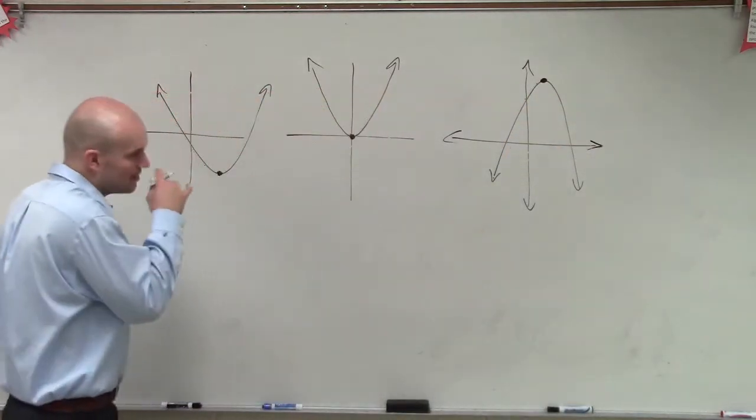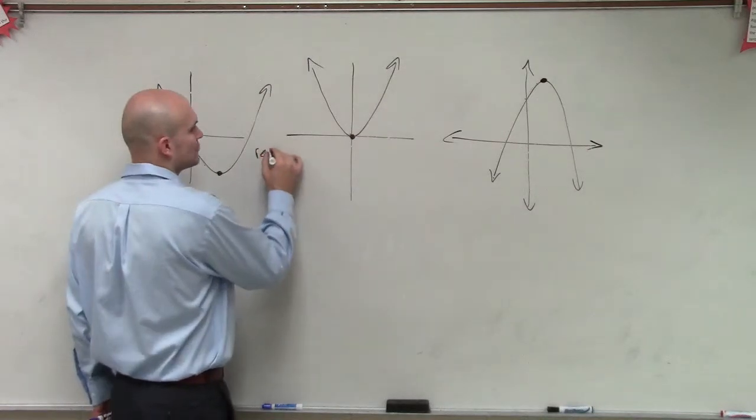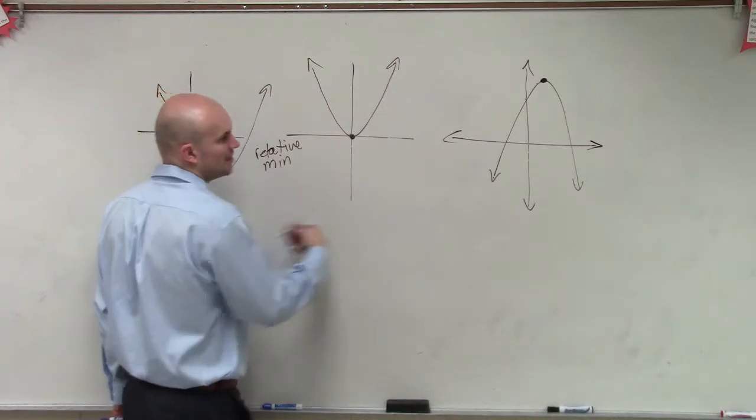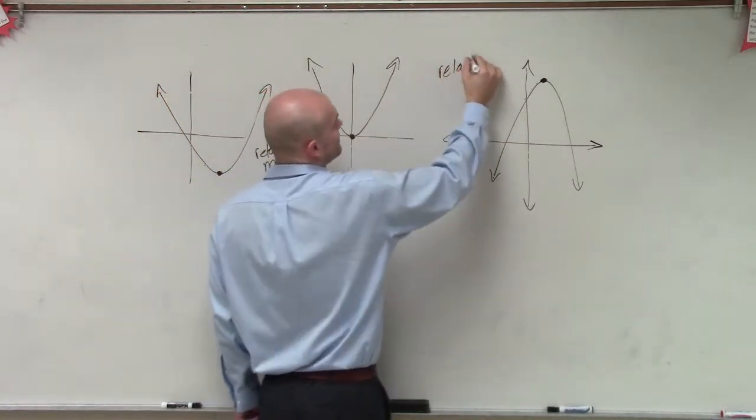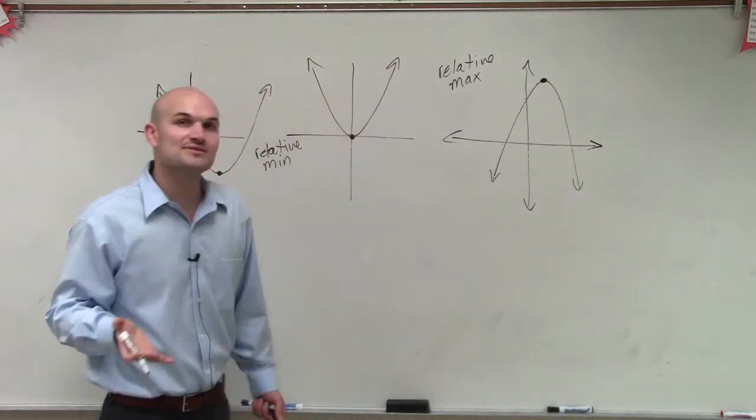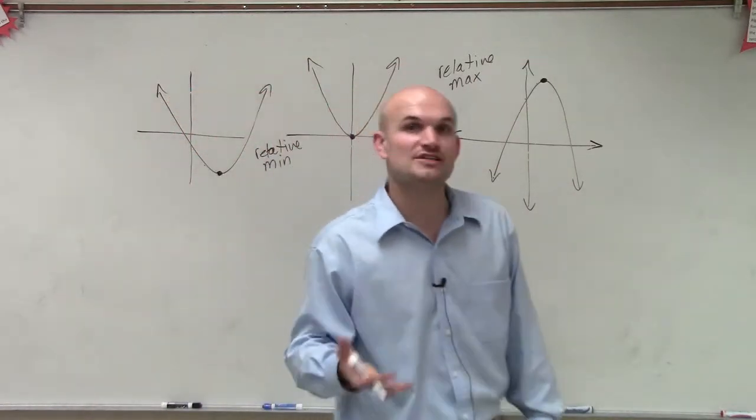Now, what we call these points is the relative min, minimum, and the relative maximum. Because what they are is they're the maximum and the minimum values of each of our quadratic.